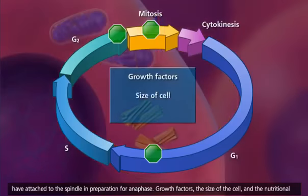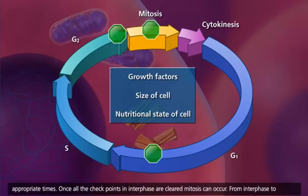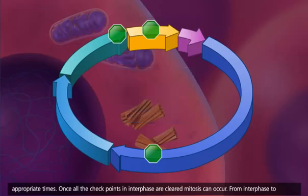Growth factors, the size of the cell, and the nutritional state of the cell are all contributing factors in cell cycle regulation, ensuring that only certain cells divide at appropriate times. Once all the checkpoints in interphase are cleared, mitosis can occur.